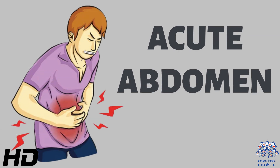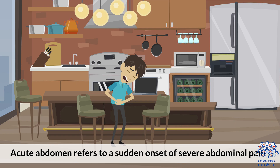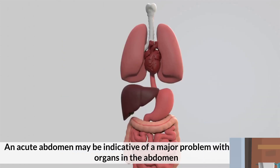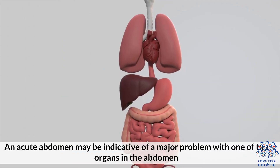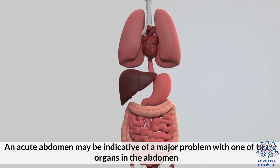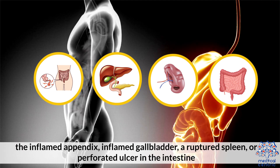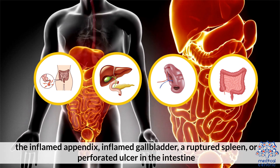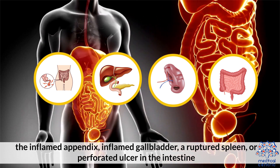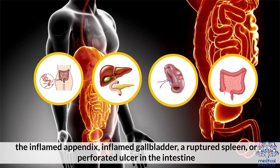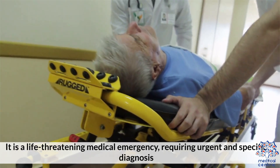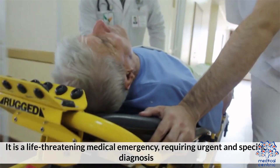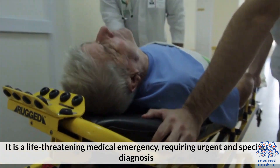Today's topic is acute abdomen. Acute abdomen refers to a sudden onset of severe abdominal pain. An acute abdomen may be indicative of a major problem with one of the organs in the abdomen, such as an inflamed appendix, inflamed gallbladder, a ruptured spleen, or a perforated ulcer in the intestine. It is a life-threatening medical emergency requiring urgent and specific diagnosis.